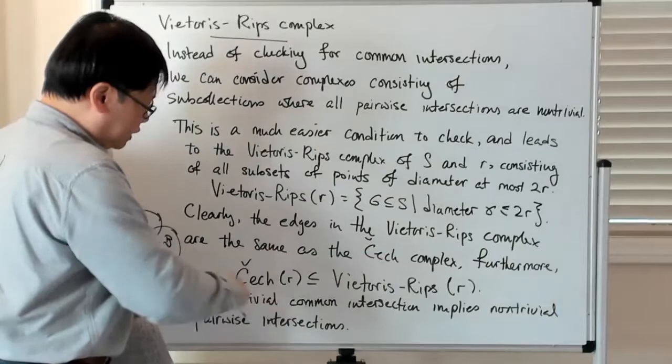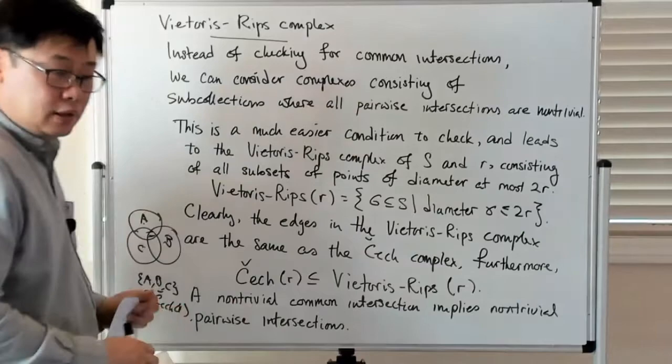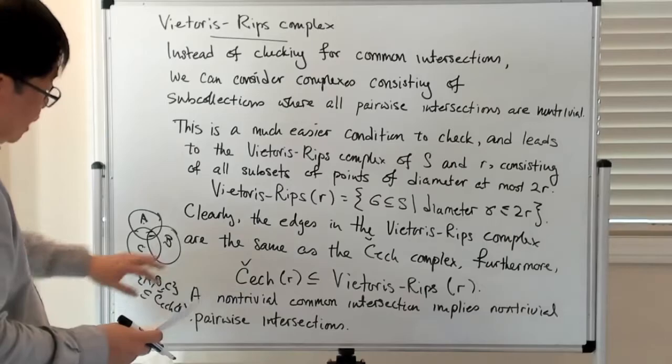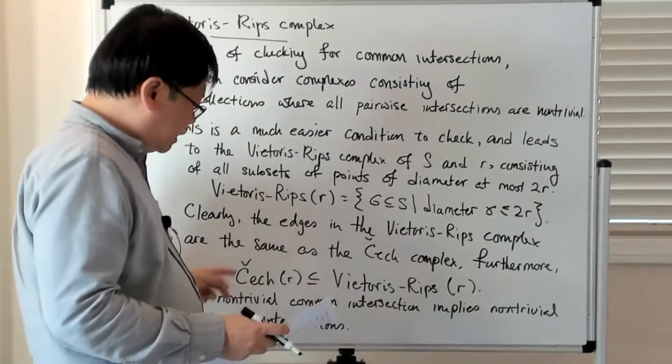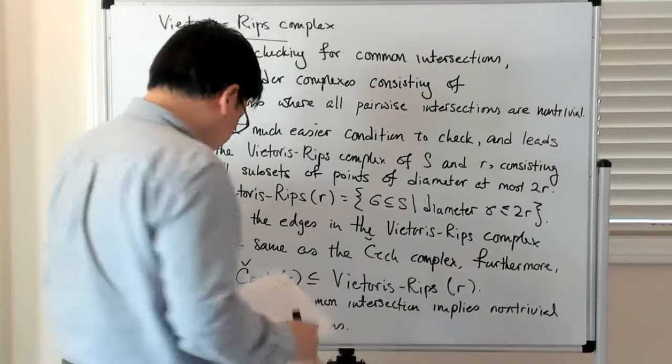So in any case, what that tells you then is that anything in the Čech complex of radius R is going to be in the Vietoris-Rips complex of radius R as well. So now the question is, is it possible then to have the Vietoris-Rips complex be contained in some other Čech complex, perhaps of a larger radius.